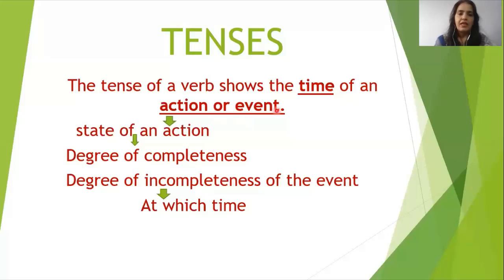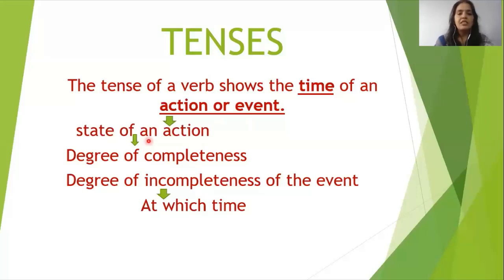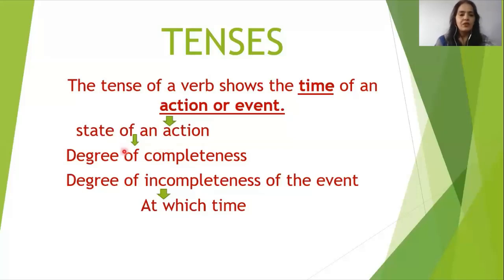When we are talking about action or event, we are referring to the state of an action — meaning whether any action, work, or event is complete or not. From this point of view, we can divide the state of an action into two parts: first, degree of completeness, and second, degree of incompleteness.